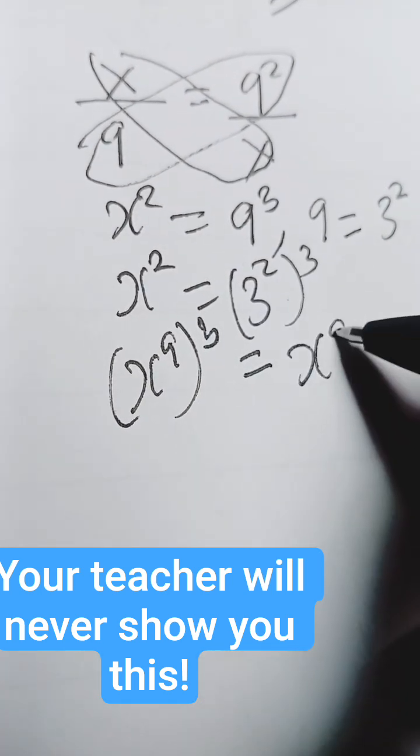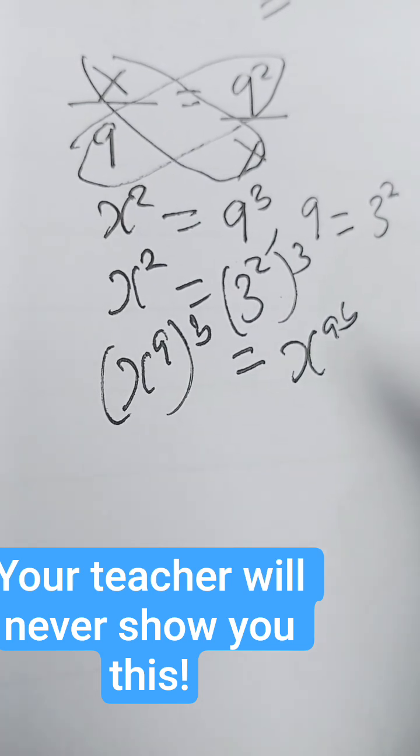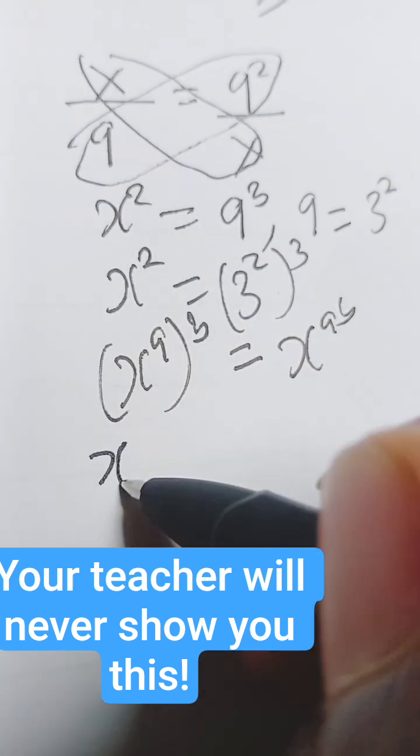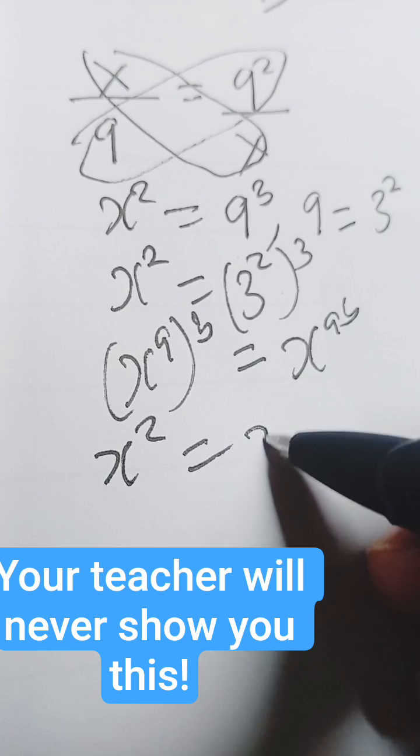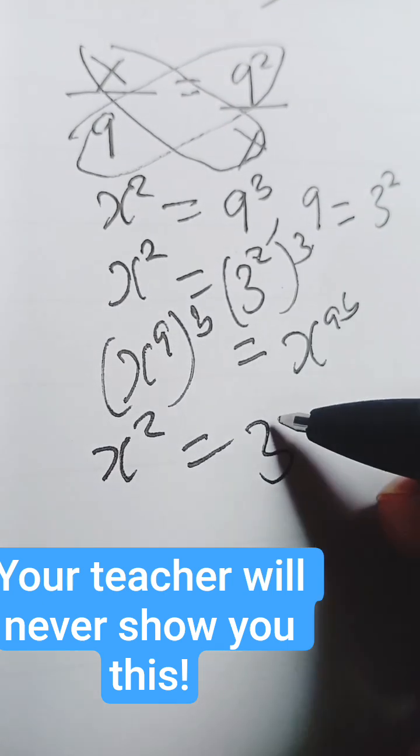is the same thing as x to the power (a times b), we are going to have x squared equals 3 to the power of 2 times 3, which is 6.